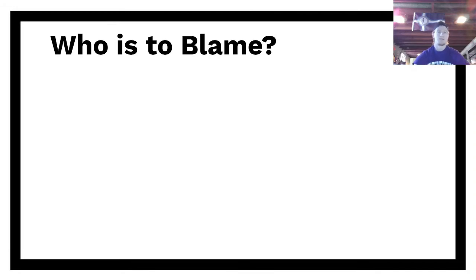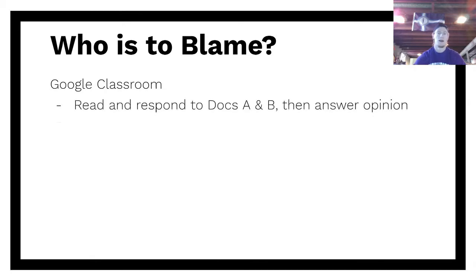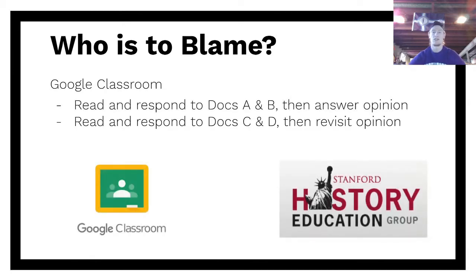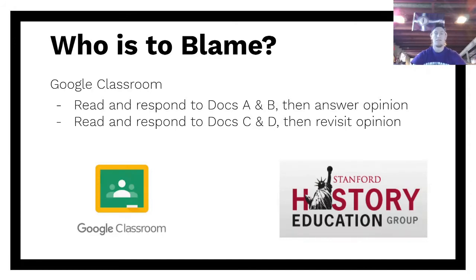Now let's get into figuring out who is to blame. There are documents posted on Google Classroom from the Stanford History Education Group. You're going to read and respond to the first two documents and give your opinion on who is to blame for the current situation. Then you'll read documents C and D and revisit that opinion. Make sure you take the time, read thoroughly, complete the guiding questions, and give your opinion after the first two documents. Some more guiding questions for C and D — revisit that opinion; it may or may not change. Go ahead and get working, and when you're finished, come back for the second half.